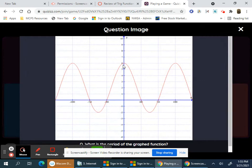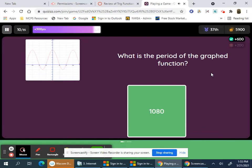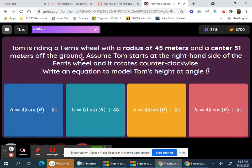The period of this graph here is going from 0 to 1080. The ferris wheel centers at 51, radius 45. So 45, so 45 sine of theta plus 51.